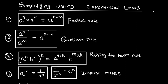The quotient rule: when dividing powers of the same base, subtract the exponents. The raising the power rule: when you have an exponent outside the bracket, the exponent outside the bracket multiplies each power's exponent inside the bracket — in a nutshell, the exponent outside the bracket multiplies each exponent inside.